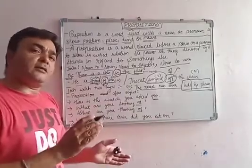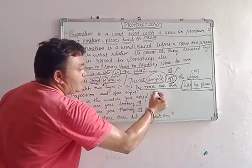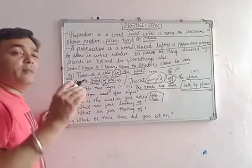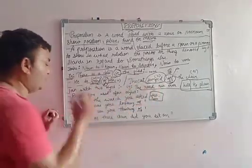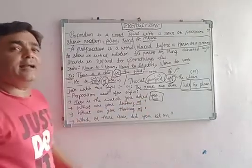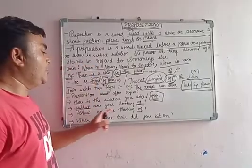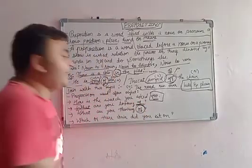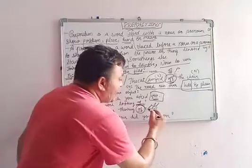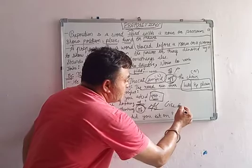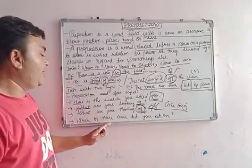Earlier I said prepositions are used before a noun or pronoun, but they can also be used after an object. For example: 'Here is the watch you asked for.' Here 'for' is the preposition, but it is used after the object. Another example: 'What are you looking at?' Here 'at' is the preposition used as an object. Also: 'What are you thinking of?' — here 'of' (O-F) is the preposition, not 'off' (O-F-F).